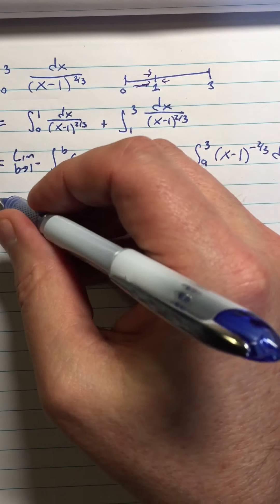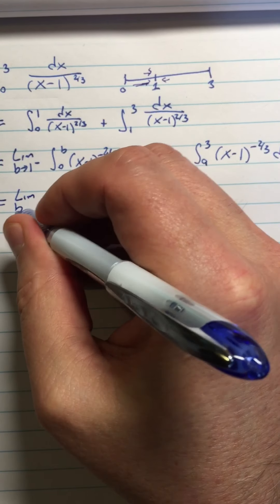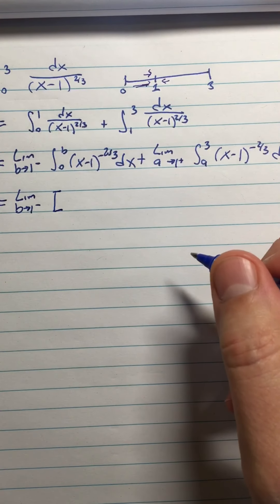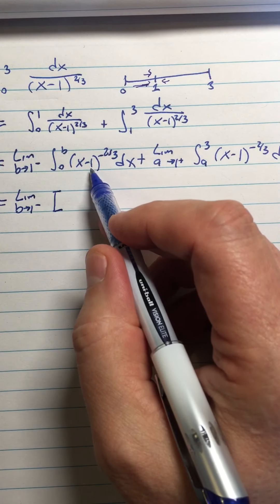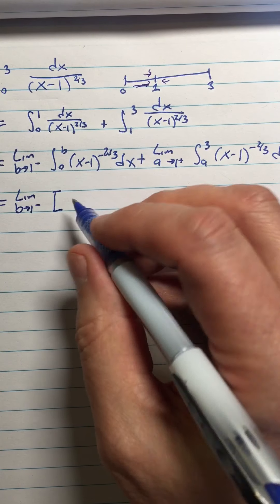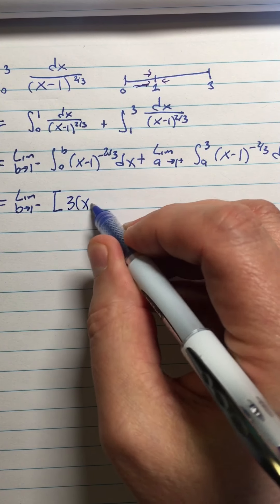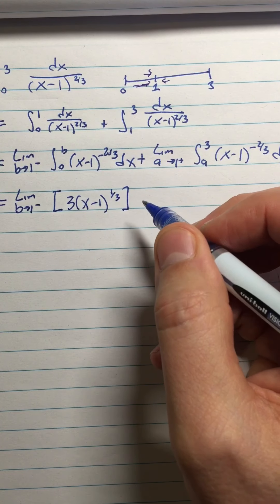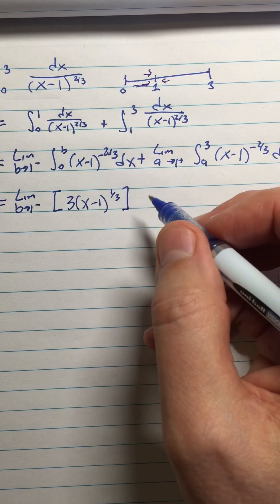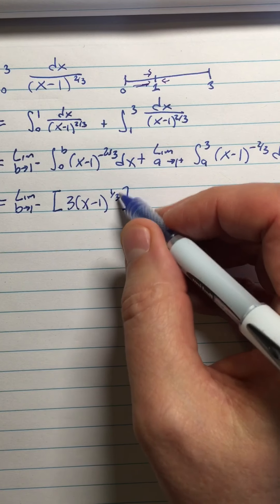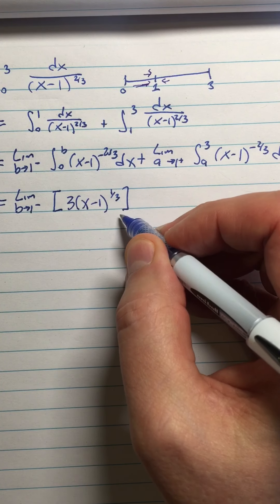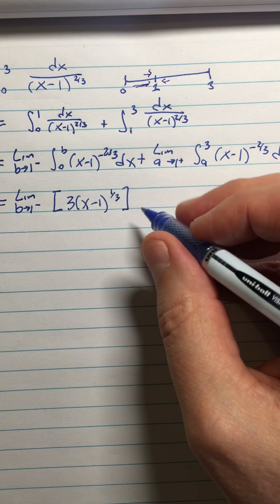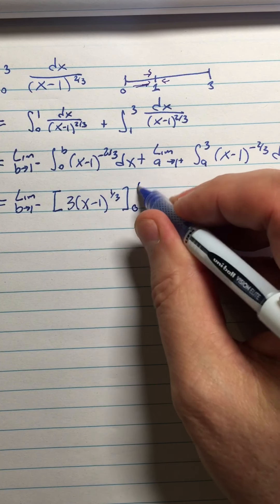Okay, so then we'll go ahead and do the anti-derivative. Limit as b approaches 1 from the left of... So this is going to be (x-1)^(1/3) divided by 1/3, so we'll make it 3(x-1)^(1/3). We're really doing a u-substitution, u equals x minus 1, but du equals dx, that's a linear u-substitution. So we can basically treat the x minus 1 just as though it were x. And this is from 0 to b.